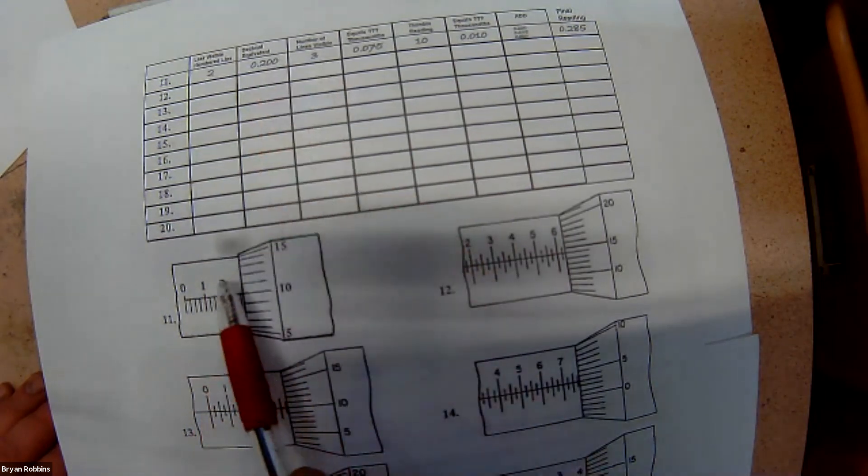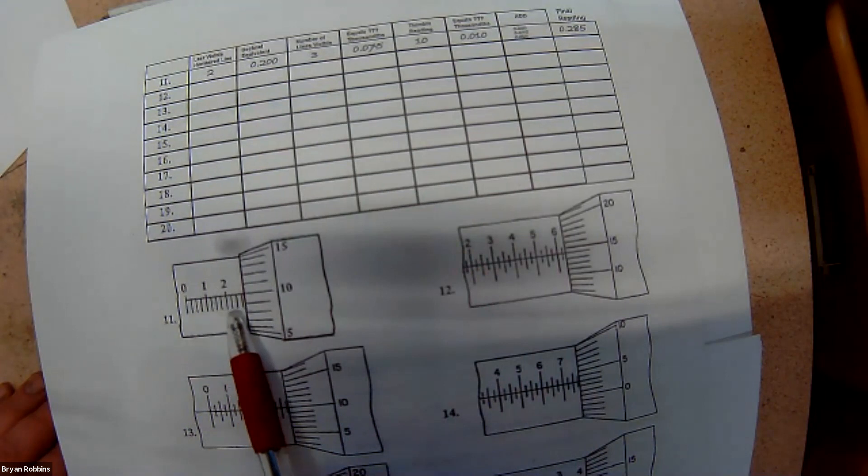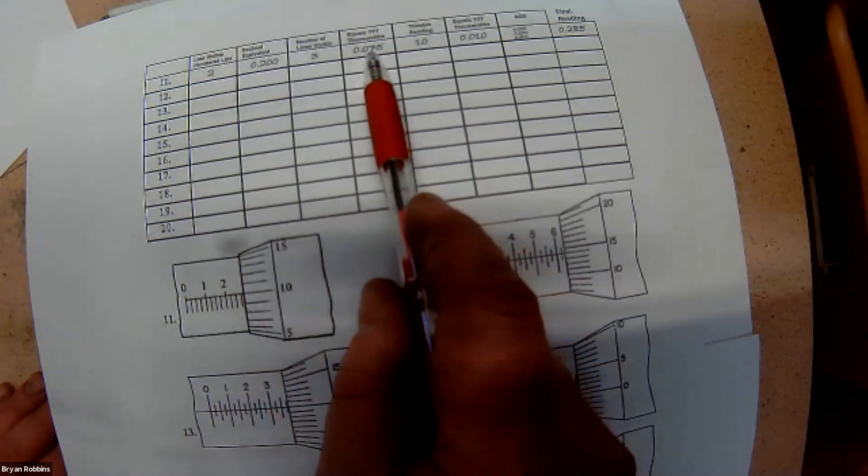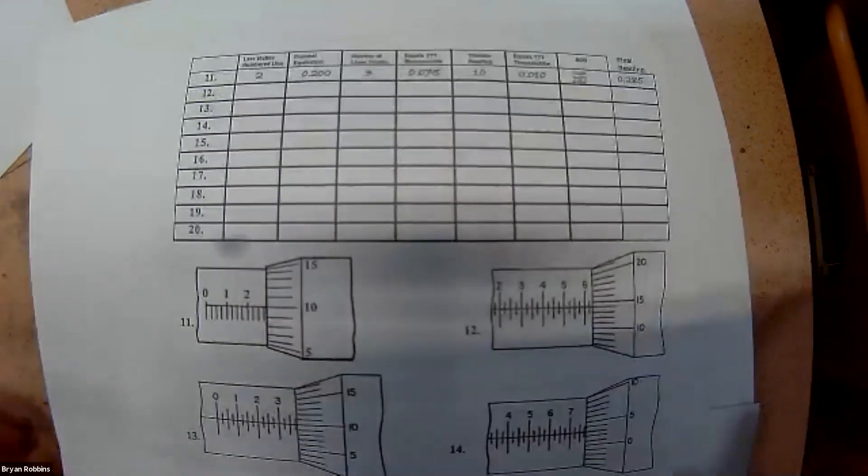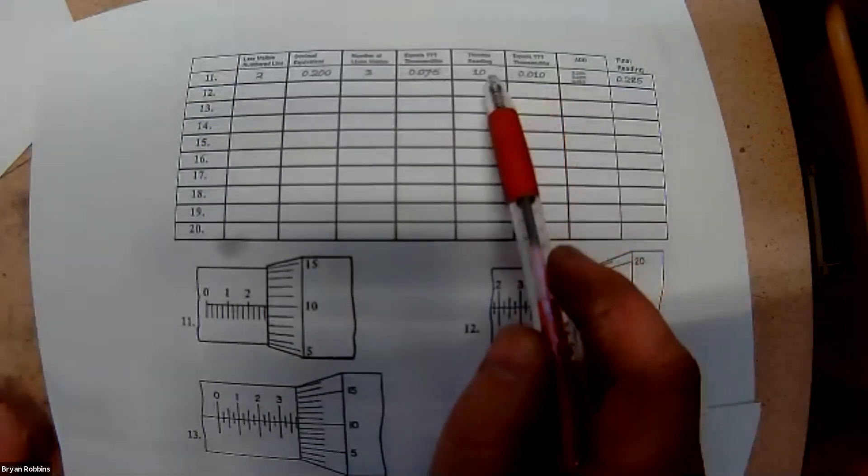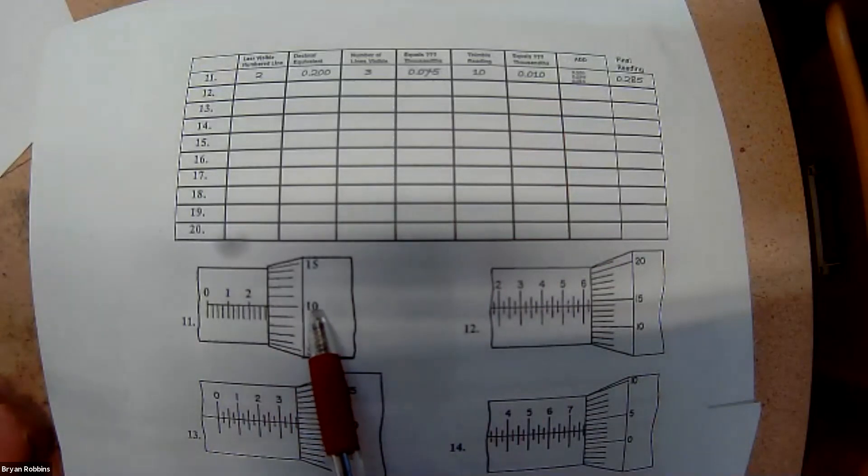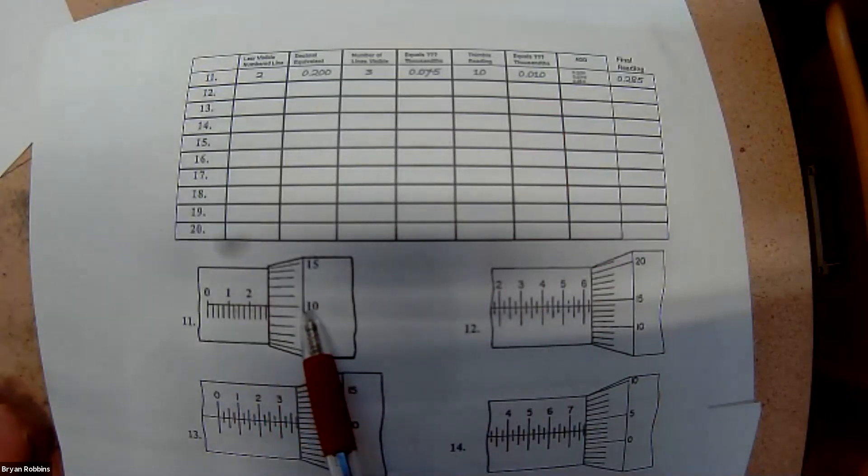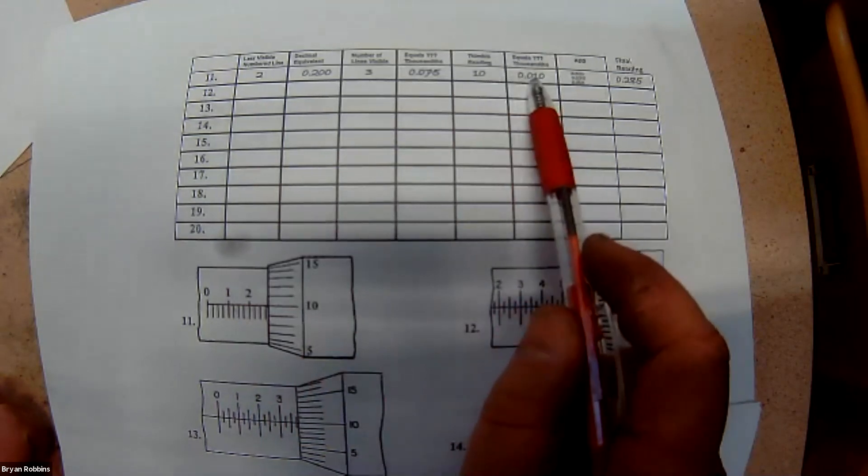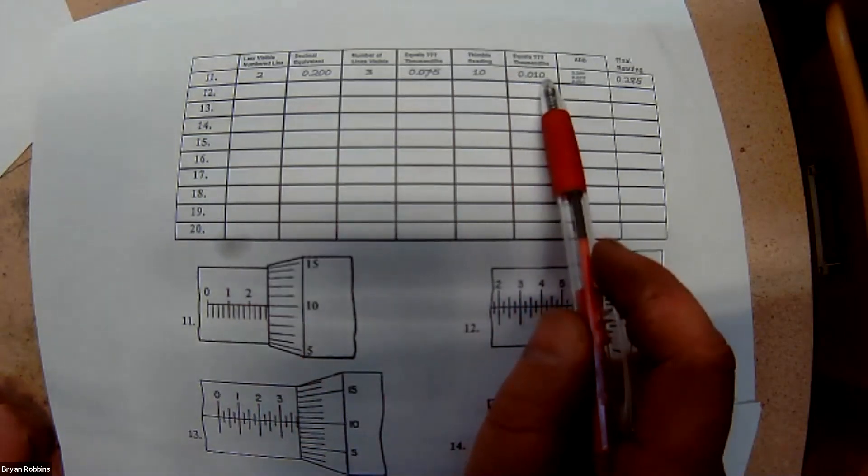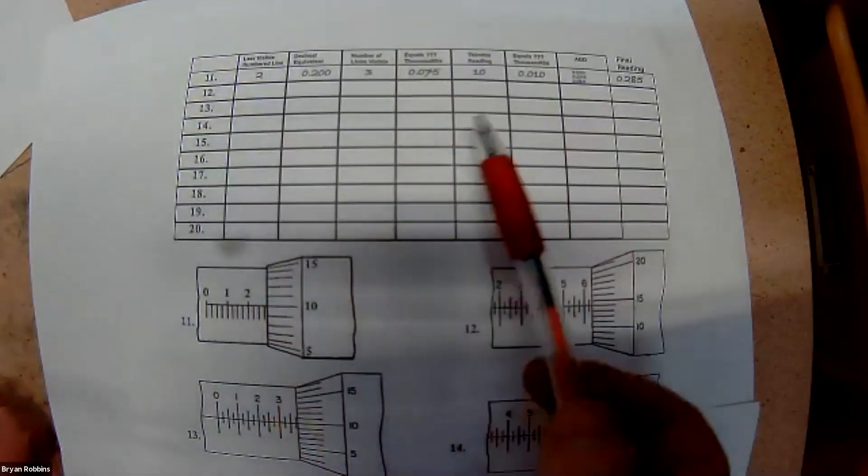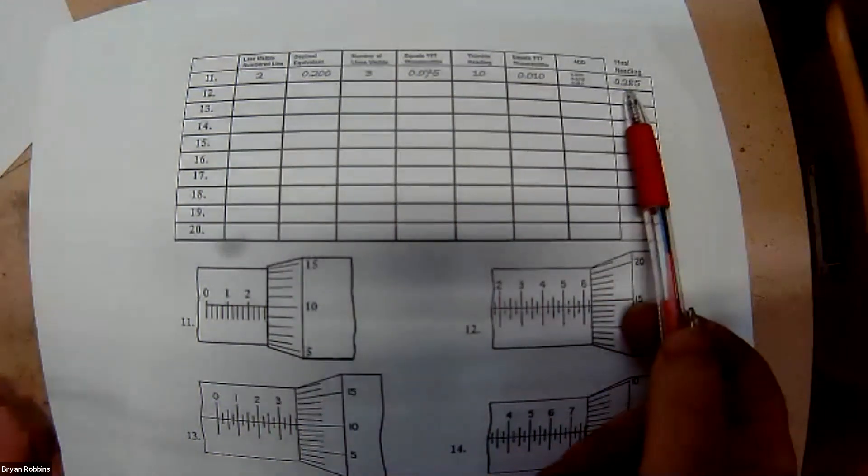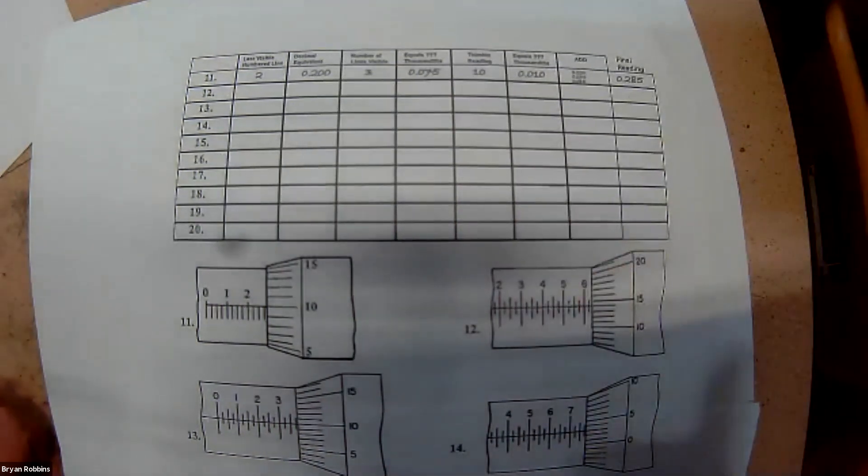The number of lines visible after that numbered line is three. One, two, three lines that we have visible after the two, which equals seventy-five thousandths. The thimble reading is a 10. So, we've got a 10 right there that lines up with the index line. And that reads ten thousandths, or .010. When we add that all together, two hundred thousandths plus seventy-five thousandths plus ten thousandths, we get that final reading of two hundred and eighty-five thousandths of an inch.